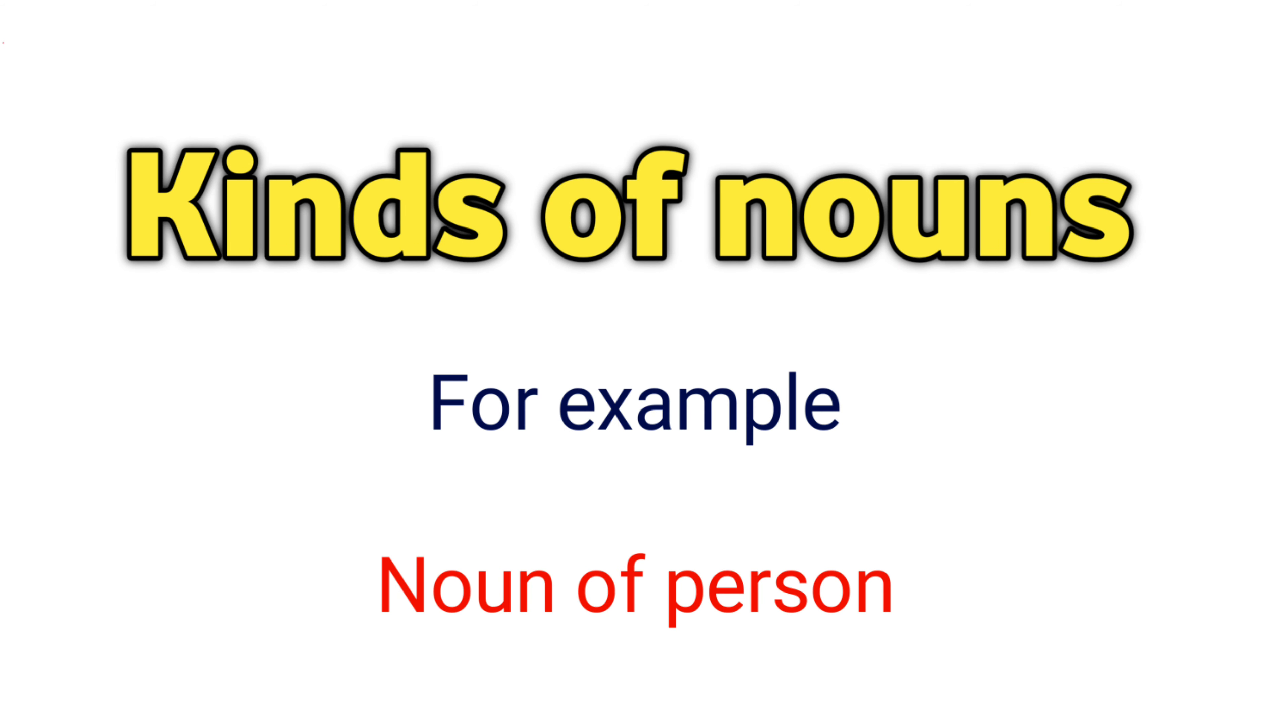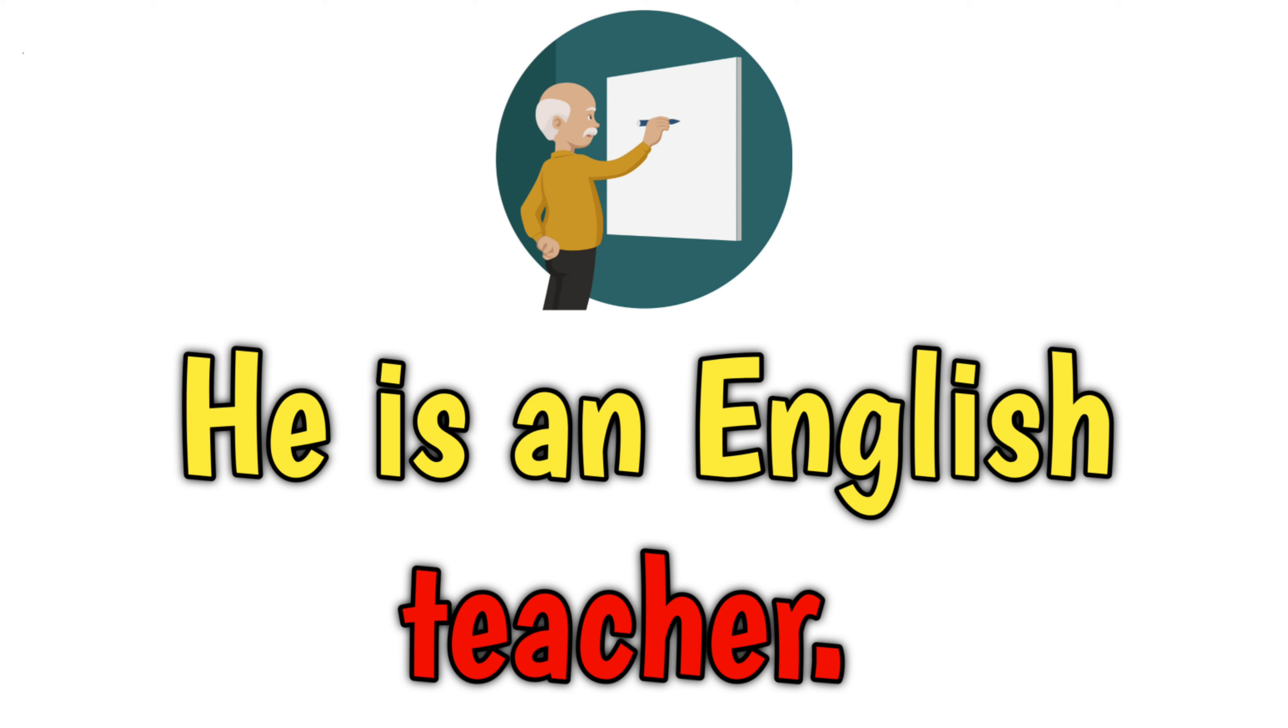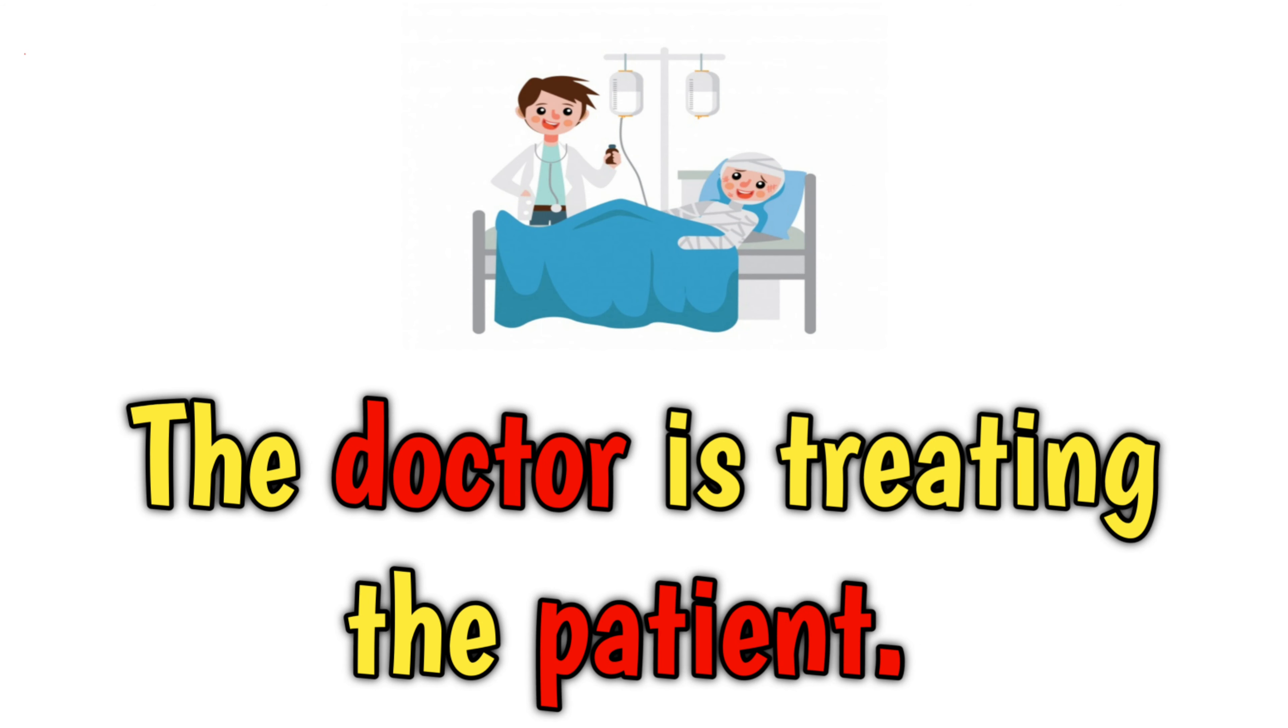Let's look at some example sentences. For noun of person: He is an English teacher. The doctor is treating the patient. Both doctor and patient are nouns of people.